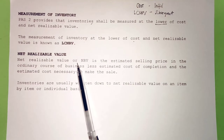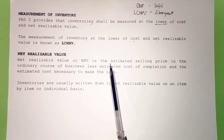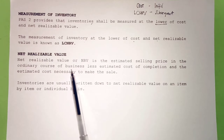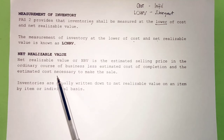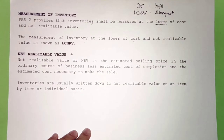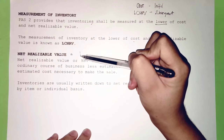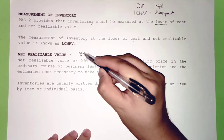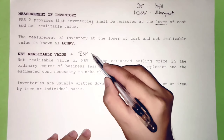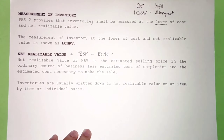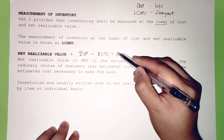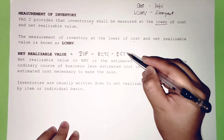Net realizable value (NRV) is the estimated selling price in the ordinary course of business, less estimated cost of completion, and less the estimated cost necessary to make the sale. To compute: Net Realizable Value = Estimated Selling Price − Estimated Cost to Complete − Estimated Cost to Sell.